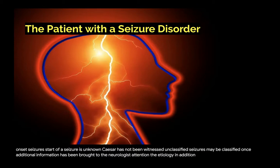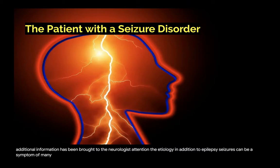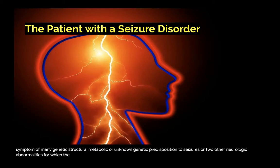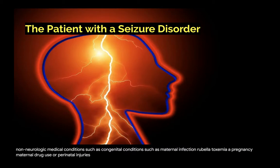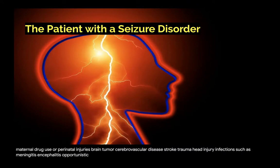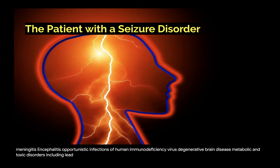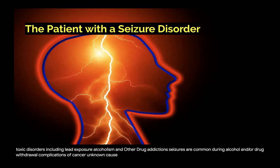In addition to epilepsy, seizures can be a symptom of many different conditions. The causes can be genetic, structural, metabolic, or unknown. Structural or metabolic causes include congenital conditions such as maternal infection, rubella, toxemia of pregnancy, maternal drug use, or perinatal injuries; brain tumor; cerebrovascular disease; stroke; trauma; head injury; infections such as meningitis, encephalitis, and opportunistic infections of HIV; degenerative brain disease; and metabolic and toxic disorders including alcohol and drug addictions. Seizures are common during alcohol and/or drug withdrawal, and complications of cancer may also be a cause. When the onset and cause are unknown, a neurologic examination may diagnose the reason.